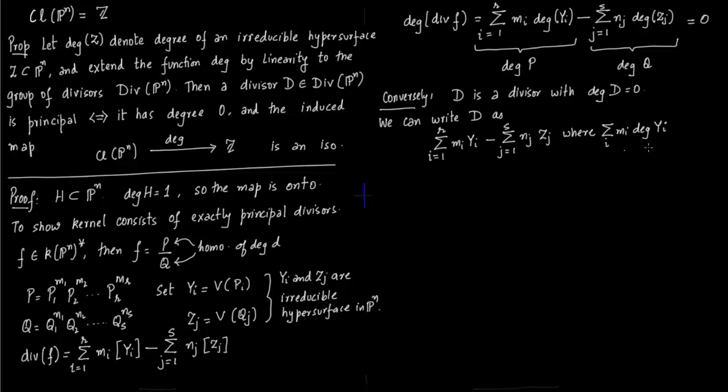Now since its degree is zero, we have to make sure that the sum of N_i degree of Y_i is equal to sum of N_j degree of Z_j. Then when you take the subtraction it will be zero. This will imply degree of D is zero. This is our assumption to start with.